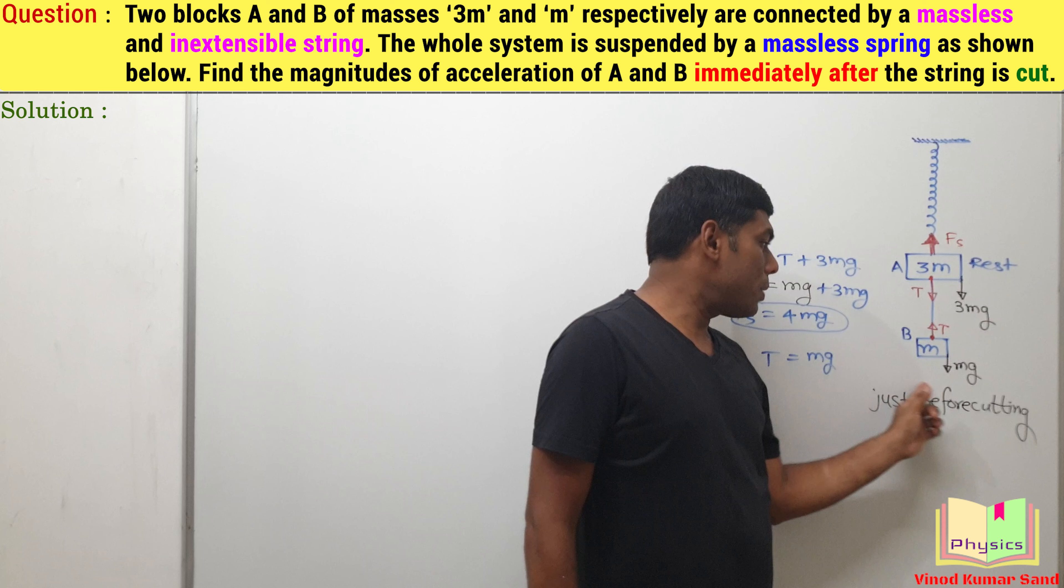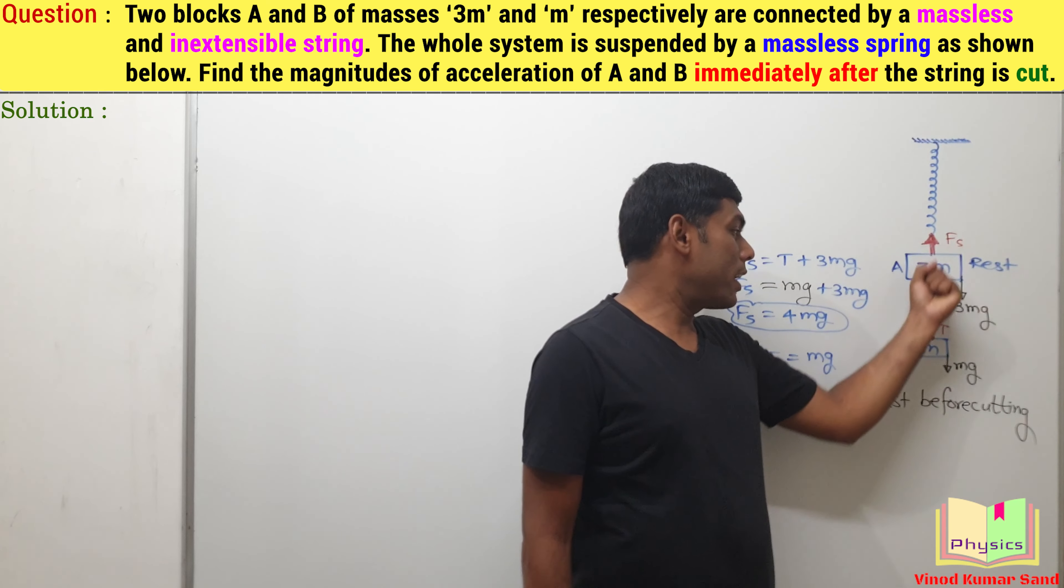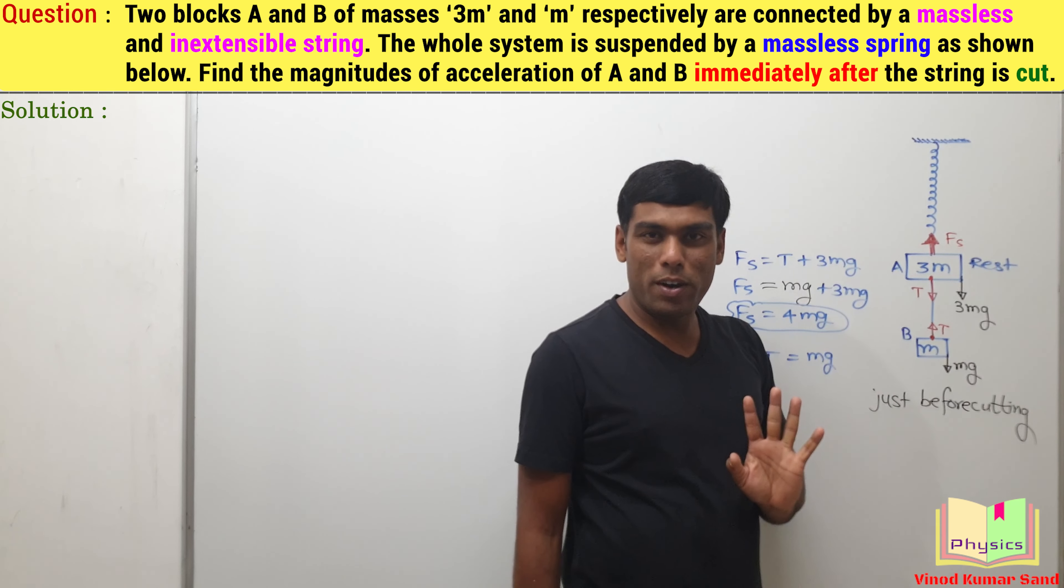Here is the spring, below the spring, how much is the hanging mass? The gravitational pull is 4mg, so the spring force should also be 4mg.